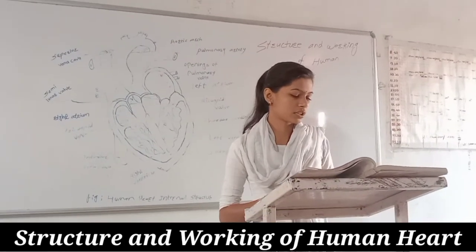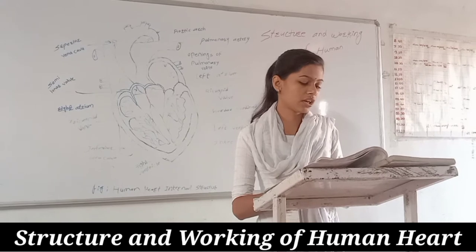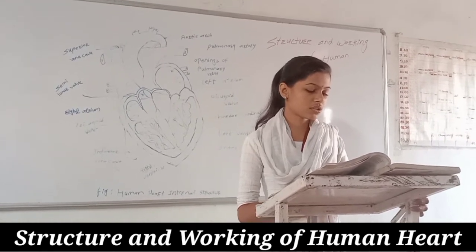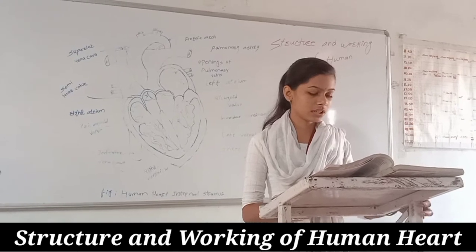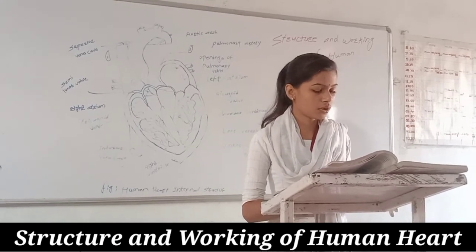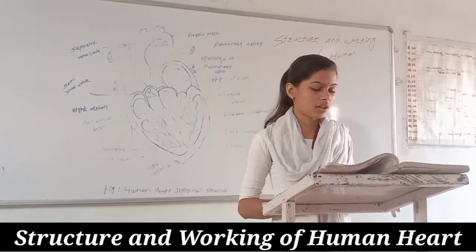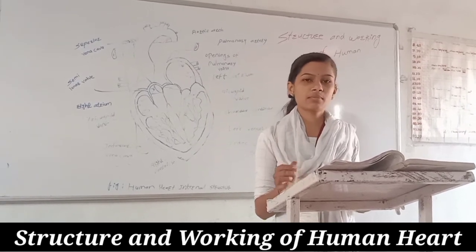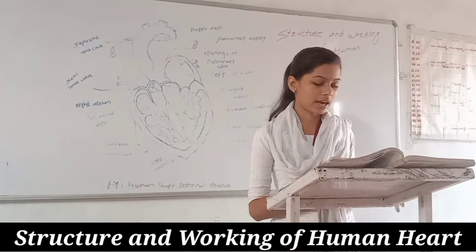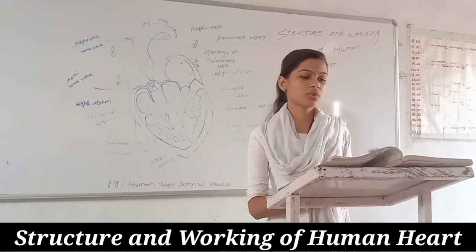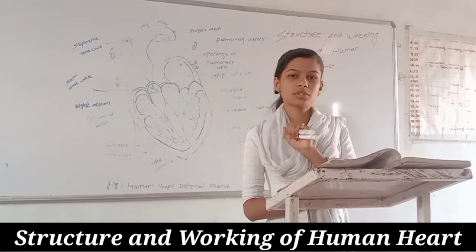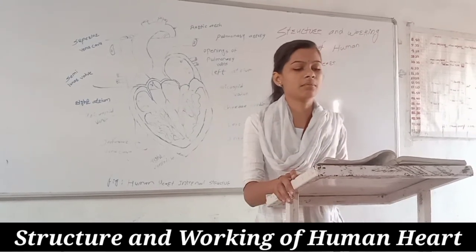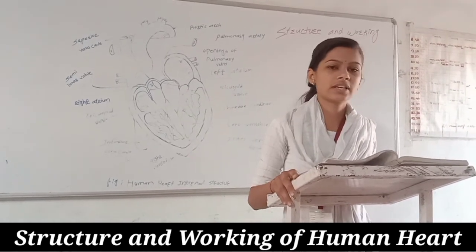The heart is enclosed in a double layer called the pericardium. It consists of two layers: the first layer is the fibrous pericardium and the second layer is the serous pericardium.